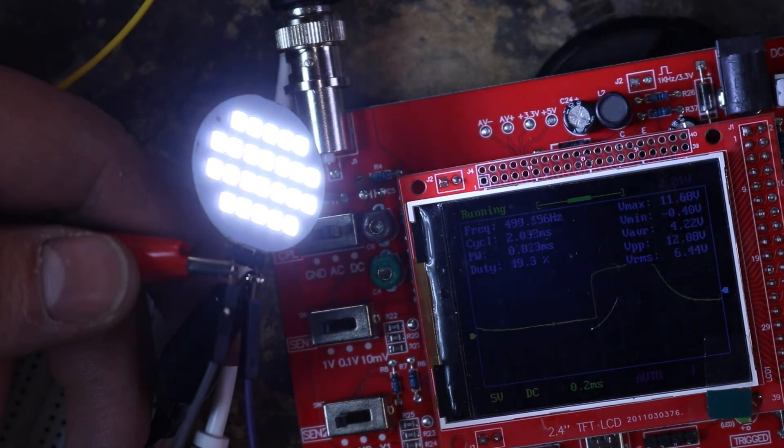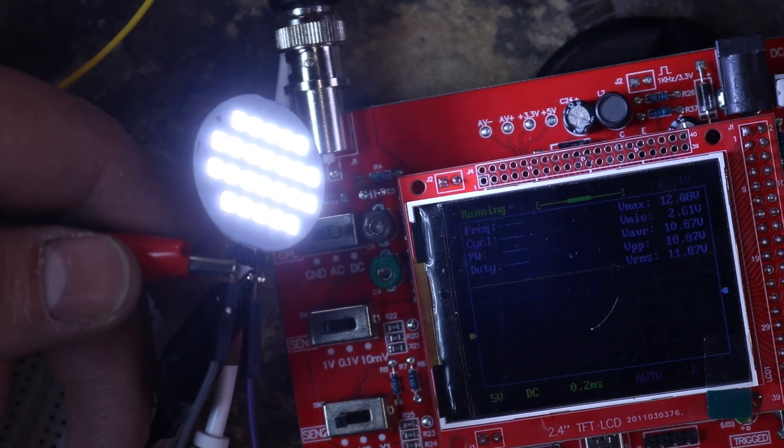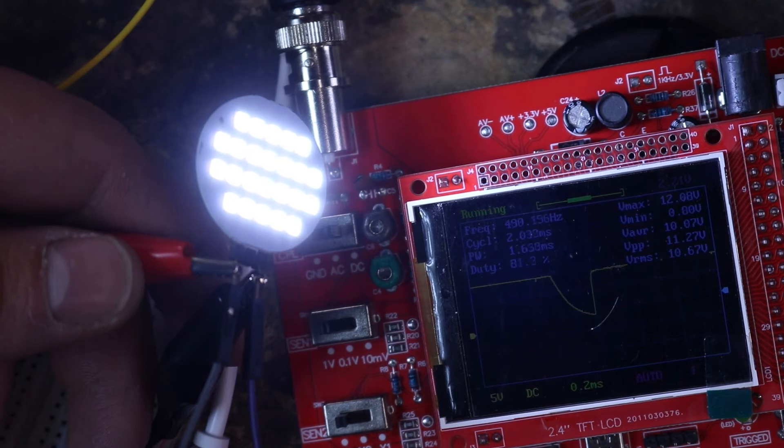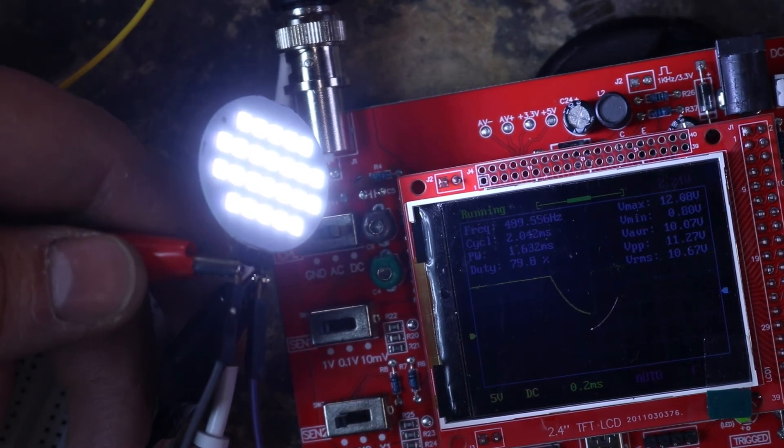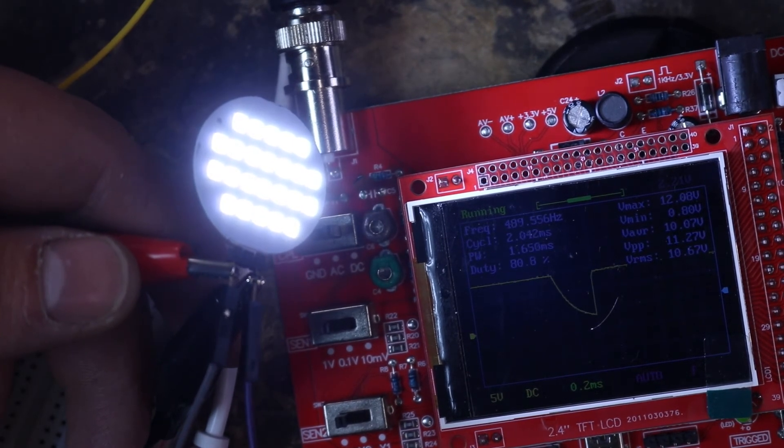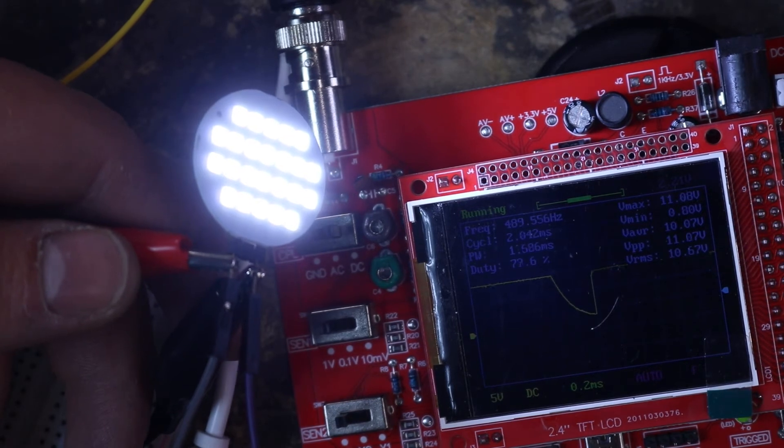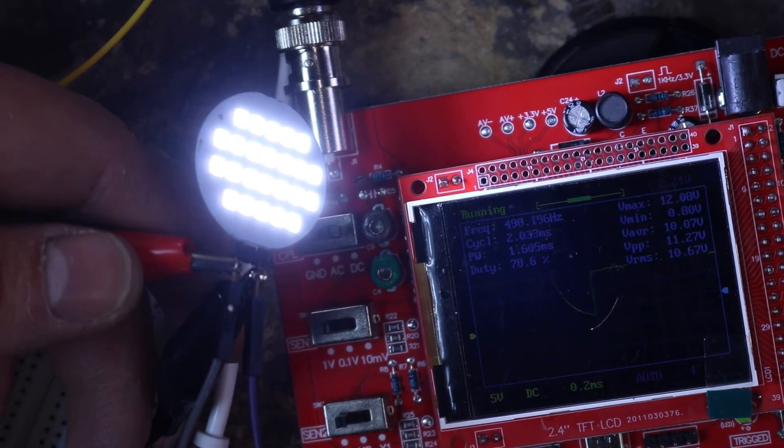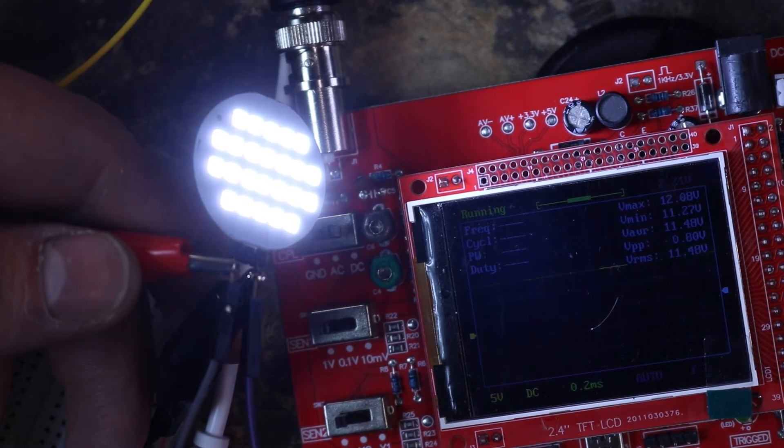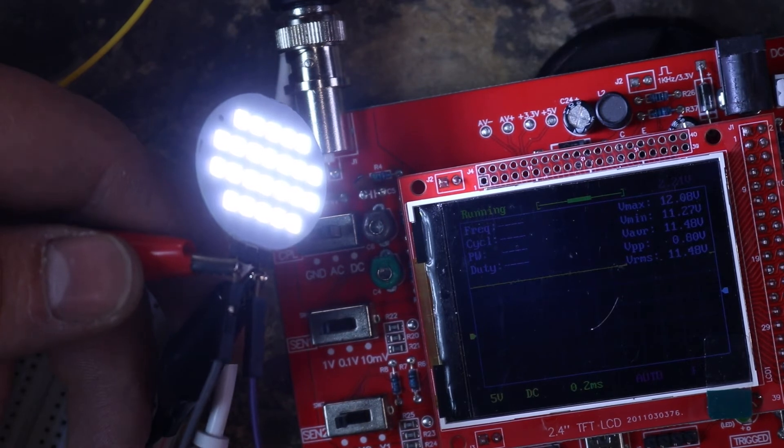And now let's increase it all the way to almost 100%. So as you can see here, I am pretty close, maybe around 85 or 90 percent. The average voltage is about 10.07 volts. This is a 12-volt LED. When you bring it all the way up, it doesn't quite go all the way to 12 volts because it is an LED, so there is a forward voltage drop.